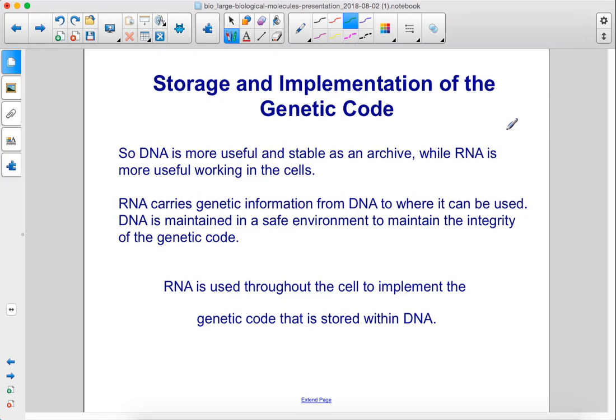DNA is more useful and stable as an archive, while RNA is more useful working in the cells. RNA carries genetic information from DNA to where it can be used. DNA is maintained in a safe environment to maintain the integrity of the genetic code. RNA is used throughout the cell to implement the genetic code stored within DNA.